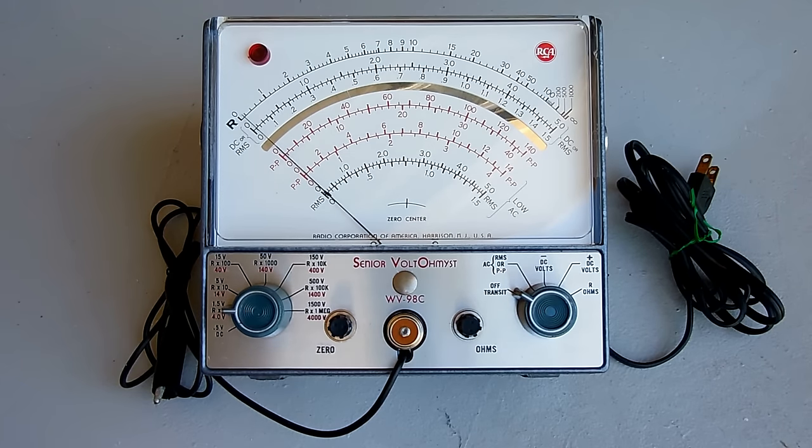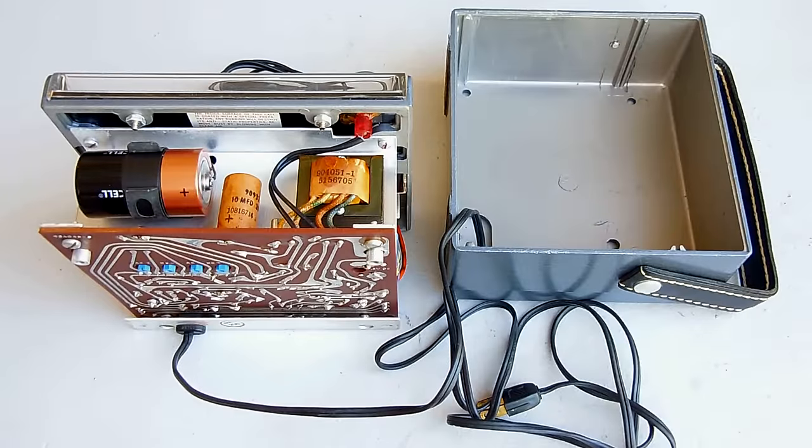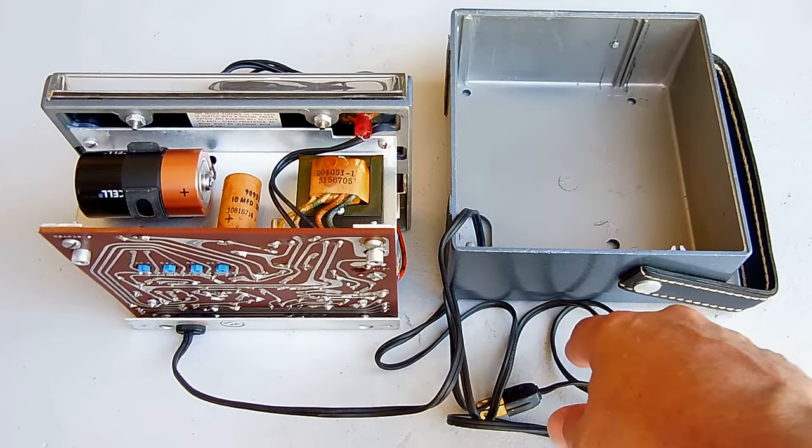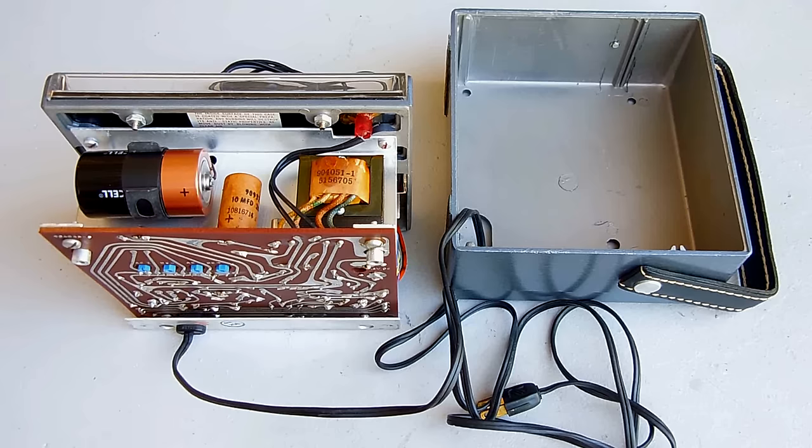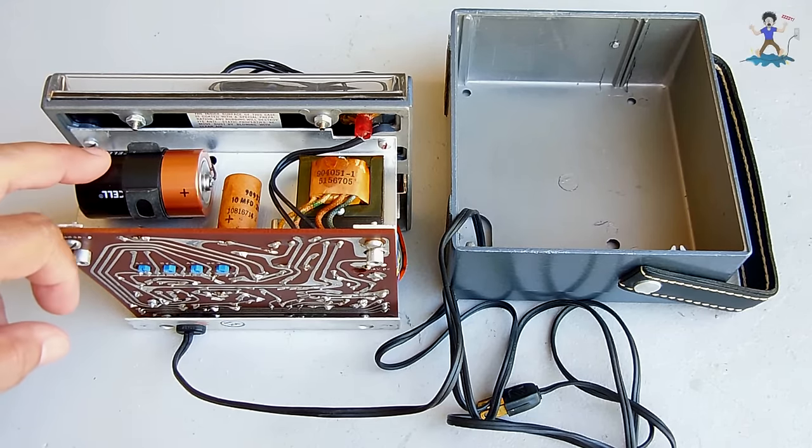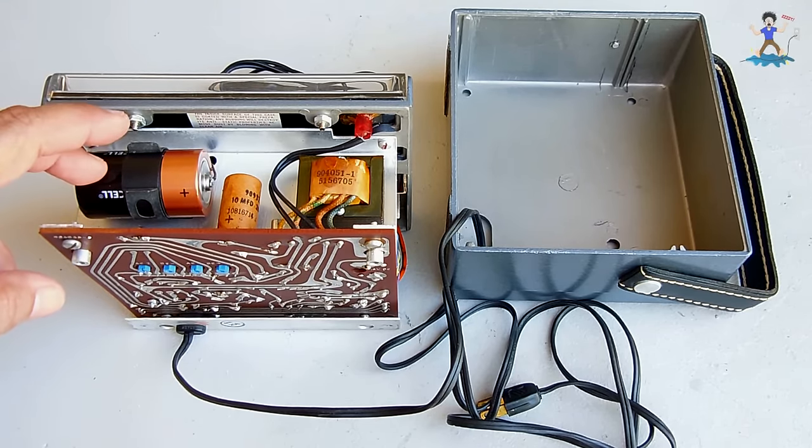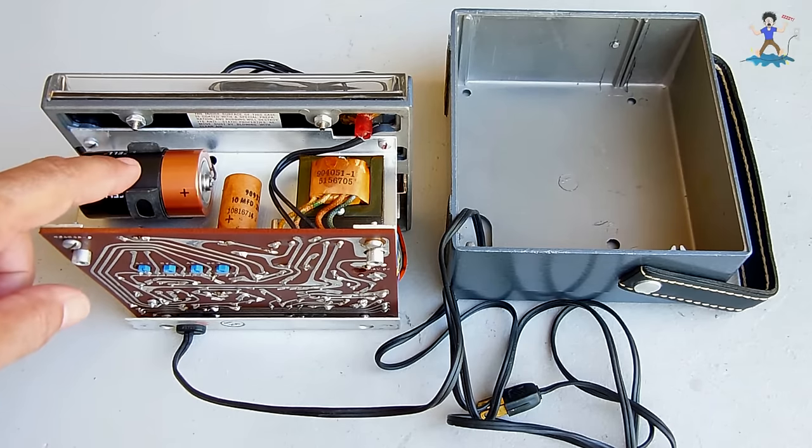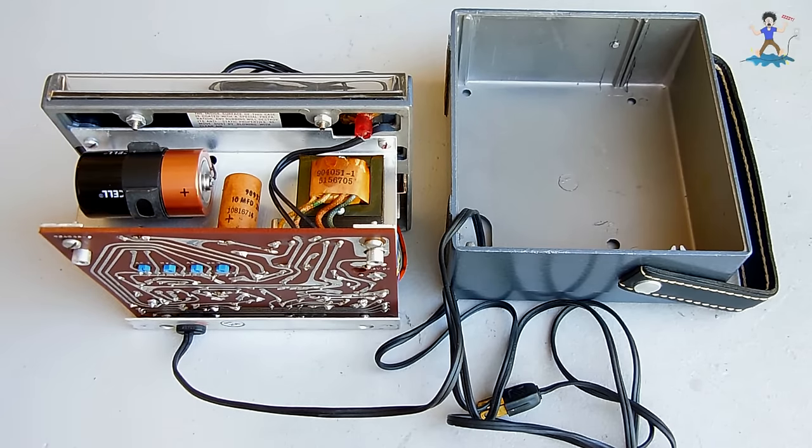Okay, the cover's off. You can see how thick that aluminum housing is. Over here, you can see a D cell battery. There was an old battery installed in here. It was only 0.2 volts.